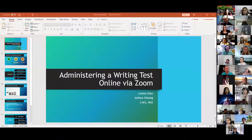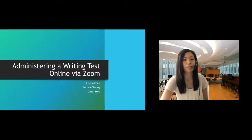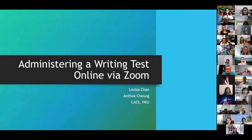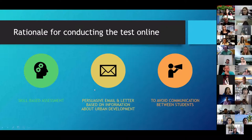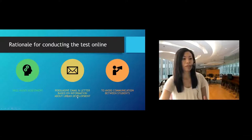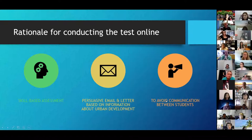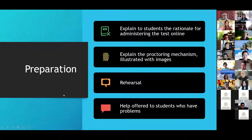Louisa and Anthia share their experience administering a writing test via Zoom. The test is for architecture students who have to write one persuasive email and one persuasive letter based on given information about urban development issues in Hong Kong. They are tested on their skills of persuasion. They didn't want students to discuss tasks with each other, which is why they chose a proctored test rather than a take-home assignment.